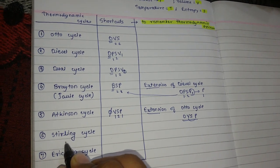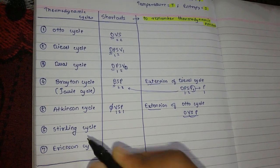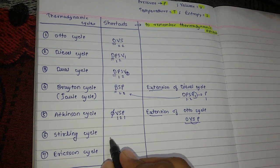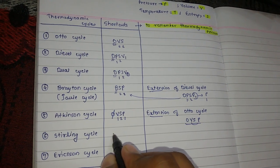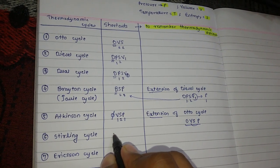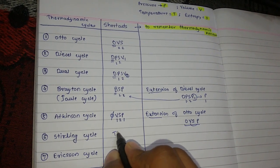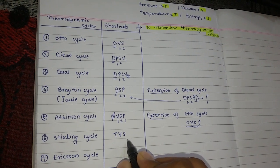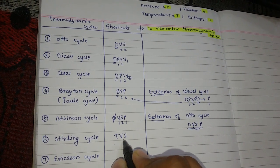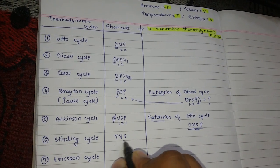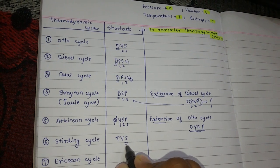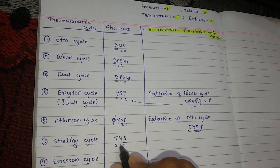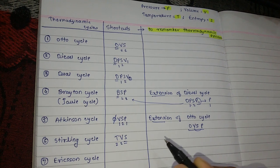Sixth is the Stirling cycle, which is the most important cycle to remember. The shortcut is TVS — TVS is also a well-known motor company. S stands for Stirling cycle, and it has two constant temperature processes and two constant volume processes.